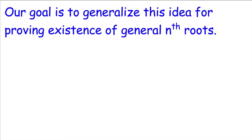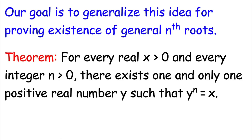Now we want to generalize this idea to prove the existence of general nth roots. Here's our existence theorem, labeled as theorem 1.21 in Rudin: for every positive real number x and every positive integer n, there exists one and only one positive real number y such that y to the n equals x. The theorem implies uniqueness as well — there exists a unique positive nth root of x. Keep in mind that x needs to be positive. For example, if x is negative 1 and n is 2, there is no positive real number whose square is negative 1 — in fact, no real number at all. The uniqueness claim is with respect to positive real roots, not negative real roots, not complex roots.